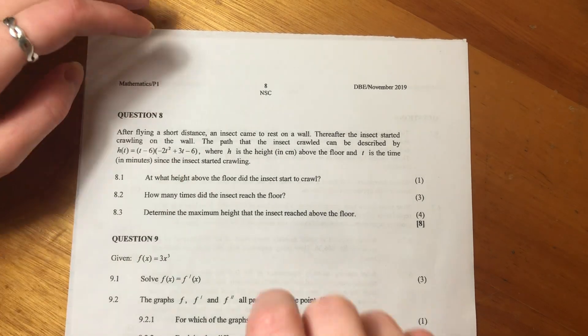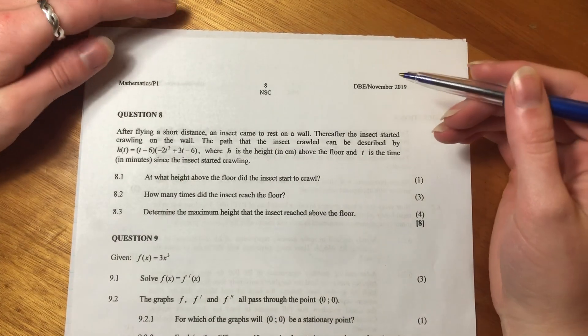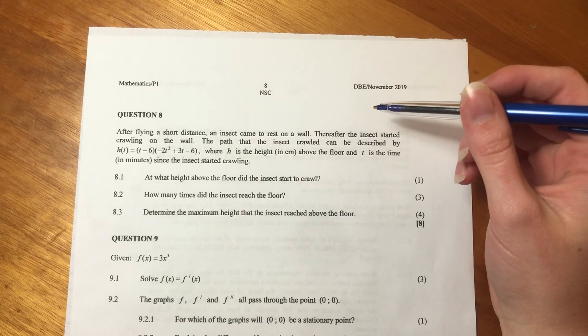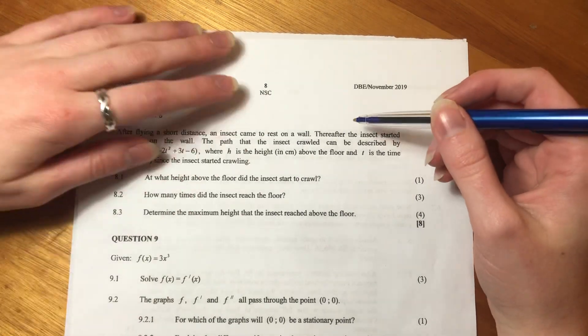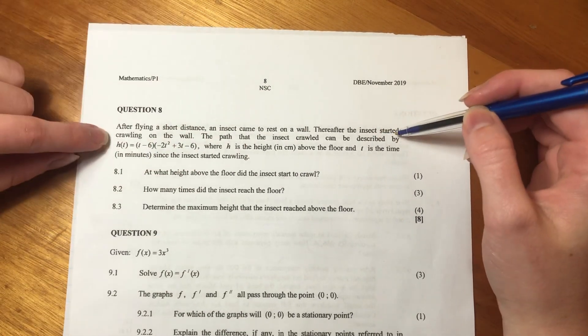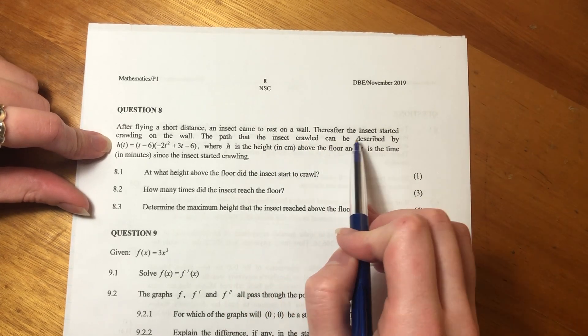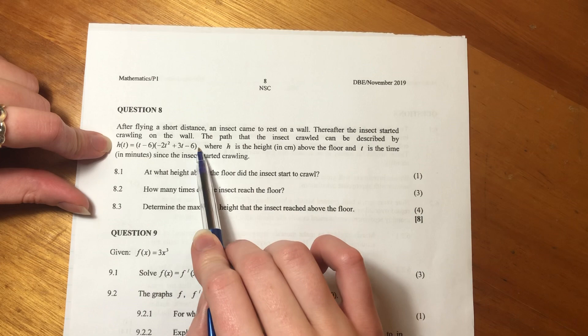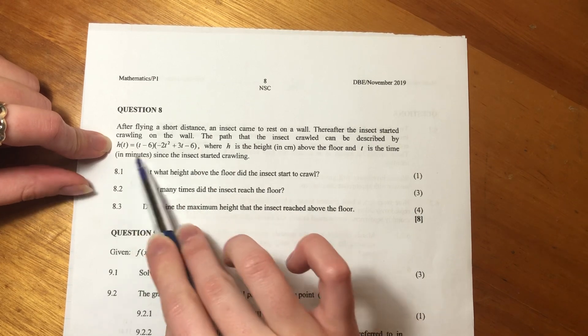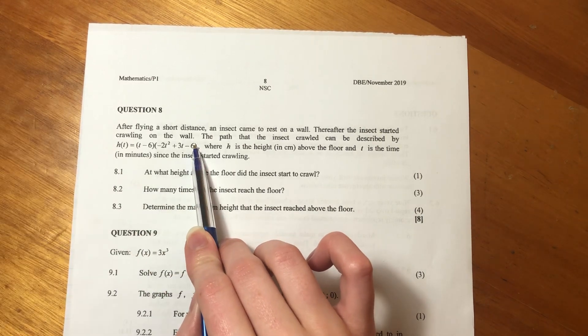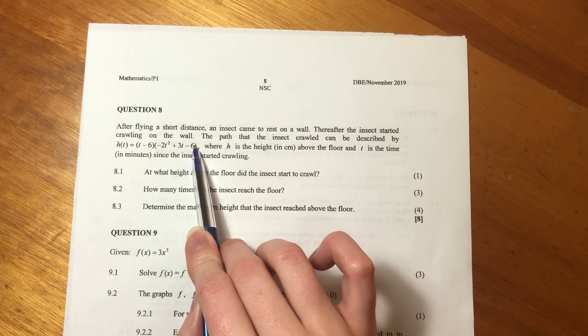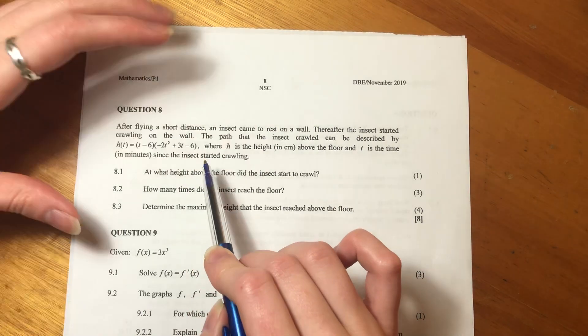Okay, we're moving on to question eight. So it says after flying a short distance, an insect came to rest on a wall. Thereafter, the insect started crawling on the wall. The path that the insect crawled can be described by this function. You should recognize this function as a cubic function. I'll show you why it's a cubic function, but you must start to be able to recognize these things.